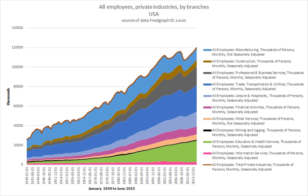Indentured servitude and slavery. Those who work under obligation for the purpose of fulfilling a debt, such as indentured servants, or as property of the person or entity they work for, such as slaves, do not receive pay for their services and are not considered employed. Some historians suggest that slavery is older than employment, but both arrangements have existed for all recorded history. Indentured servitude and slavery are not considered compatible with human rights or with democracy.